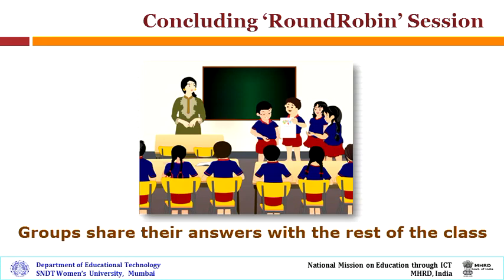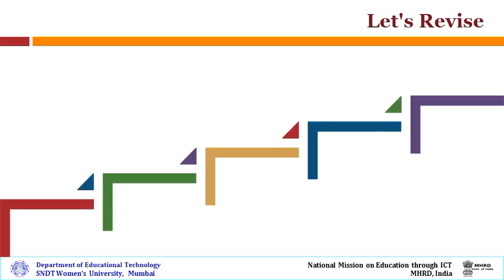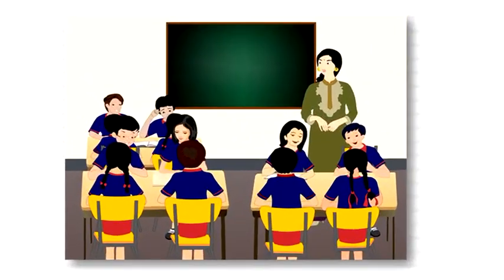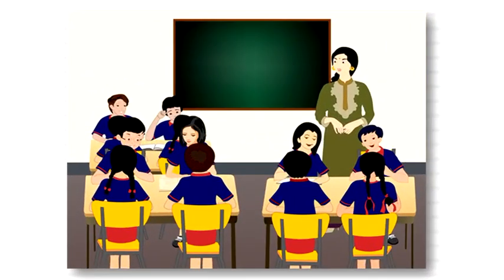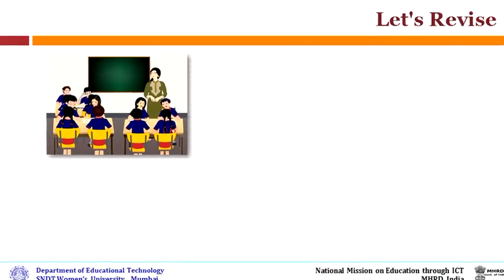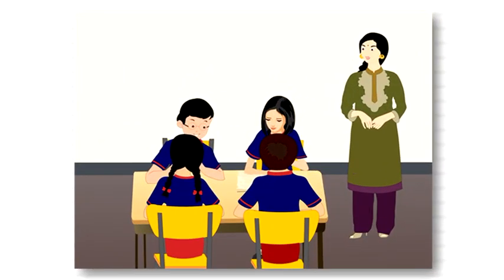Let us take a quick look at the steps once again. The teacher divides the class into groups of three to five students per group. The teacher provides writing material to the students. The teacher explains the nature of the strategy and the roles to be played by the students in the group. The teacher poses a question which needs to have multiple answers.